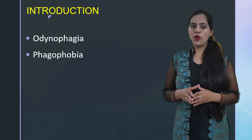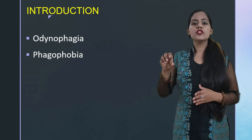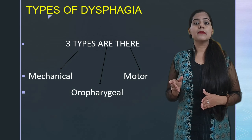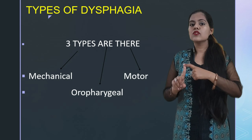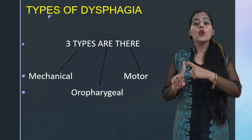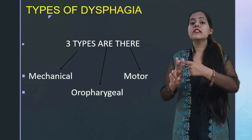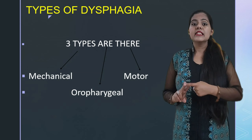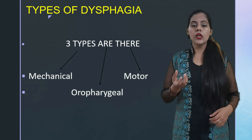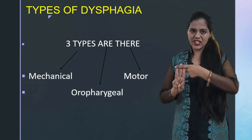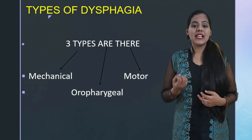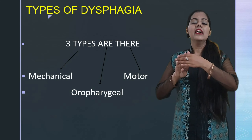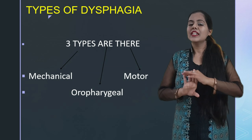Now we begin with the etiology of dysphagia. Based on the etiology, there are different types of dysphagia. When the cause is disease of the mouth or oropharynx, it is known as oropharyngeal dysphagia. When there is disease of the oesophagus, it is oesophageal dysphagia. When there is mechanical obstruction in the passage of food, it is mechanical dysphagia. And when there is weak peristalsis of the oesophagus, it is known as motor dysphagia. So there are four different types of dysphagia.